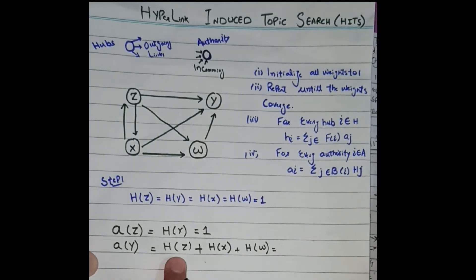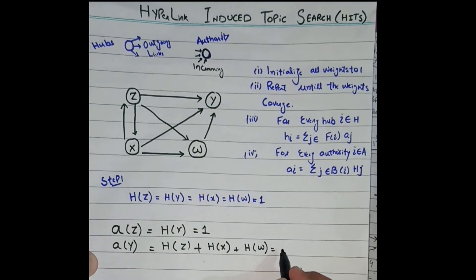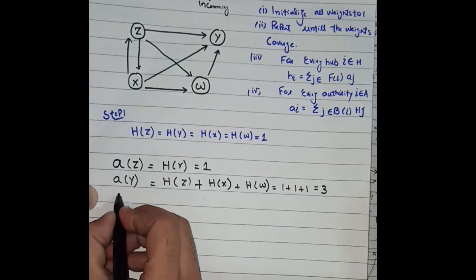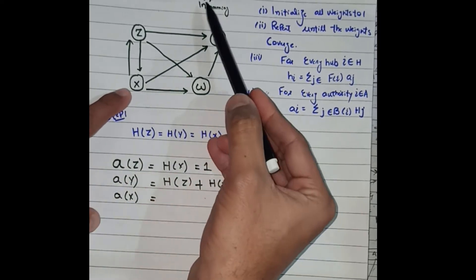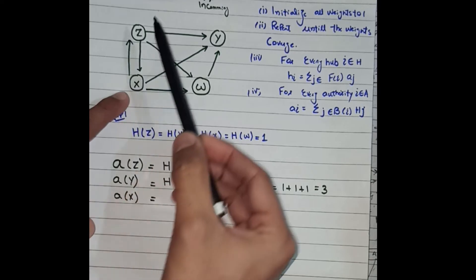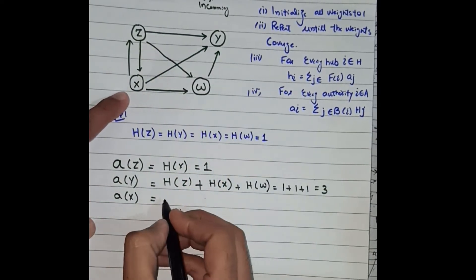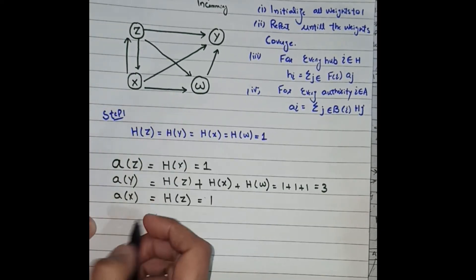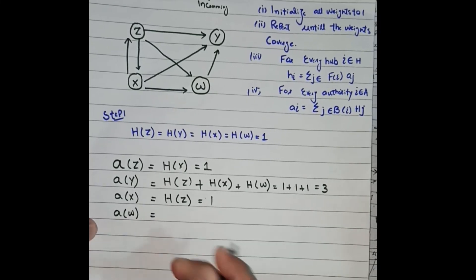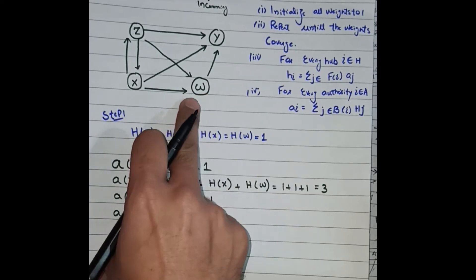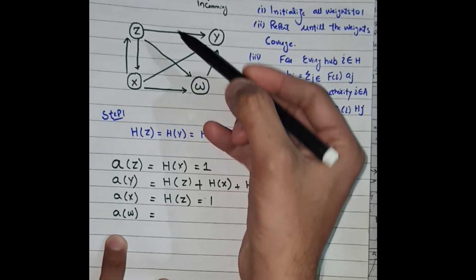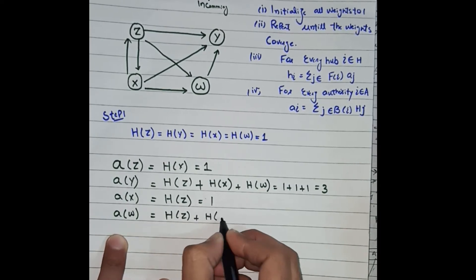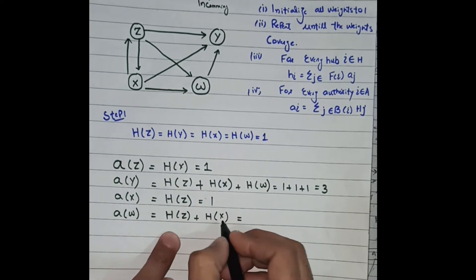Since authority of Z, X, and W are all equal to one, authority of Y equals one plus one plus one, which equals three. For authority of X, there is only one incoming link from Z, so authority of X equals hub of Z, which equals one. For authority of W, there are two incoming links from Z and X, so authority of W equals hub of Z plus hub of X, which equals two.